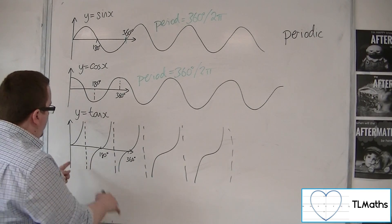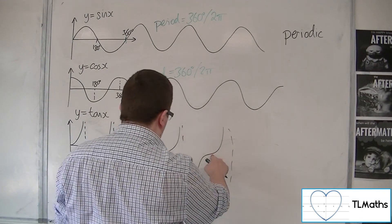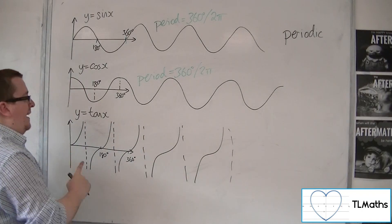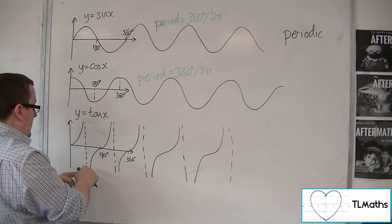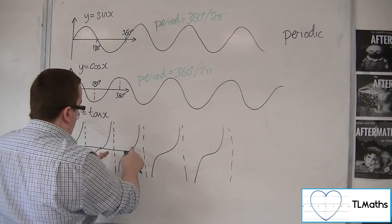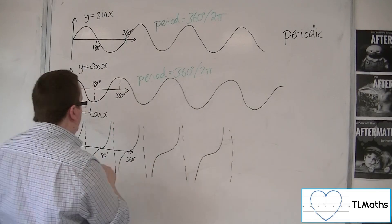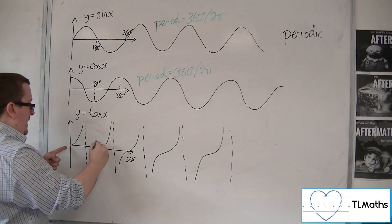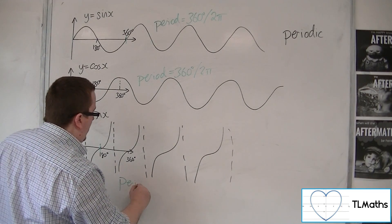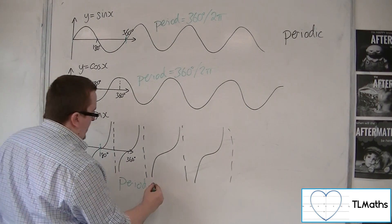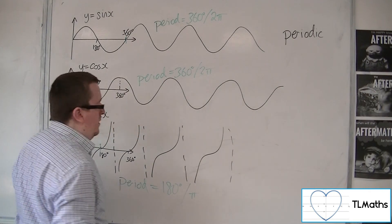In the case of tan, however, I know that this bit repeats itself — but actually it is repeating itself every time, there, there, and so on. So it actually repeats itself every 180 degrees. So tan is the odd one out. It has a period of 180 degrees or pi radians.